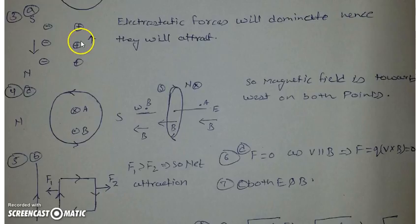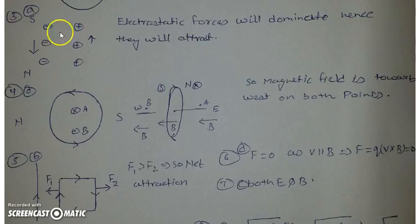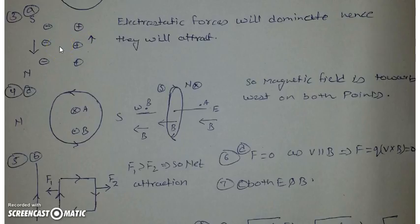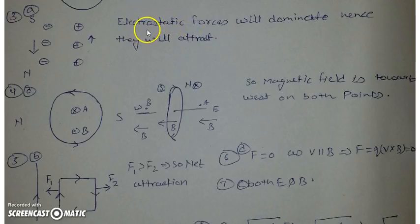The current due to electrons is in the upward direction, and the current due to protons is also in the upward direction. Because of the same direction of current produced by them, they should attract each other magnetically. But as they are not electrically neutral, there will be electrostatic forces, and in these cases electrostatic forces will dominate. Hence they will get attracted mainly because of electrostatic forces. Whenever you compare magnetic and electrostatic forces, take the overall effect due to electrostatic forces.